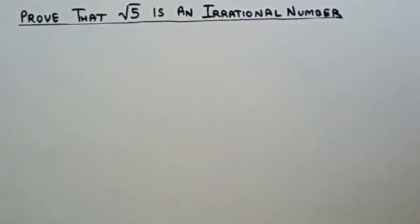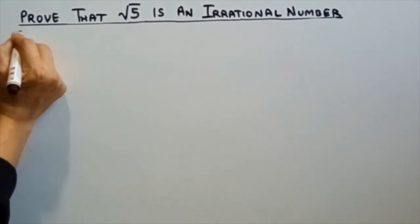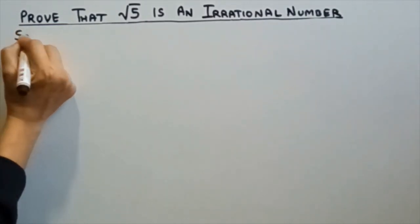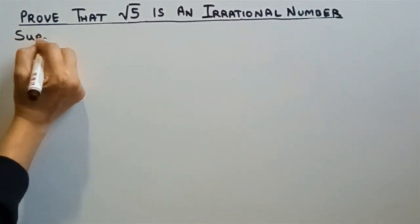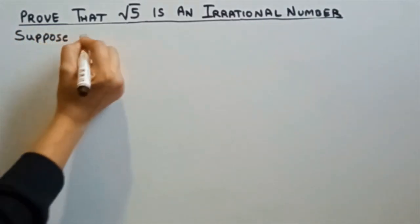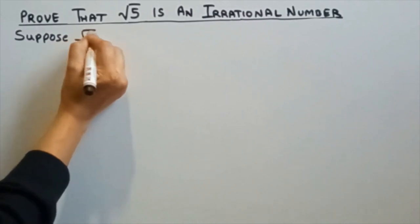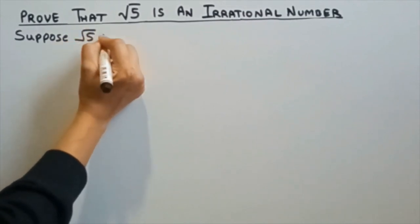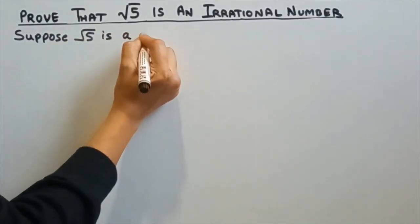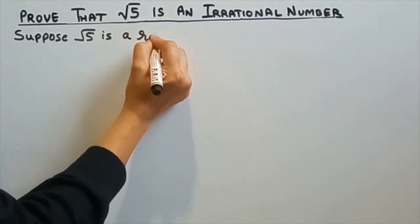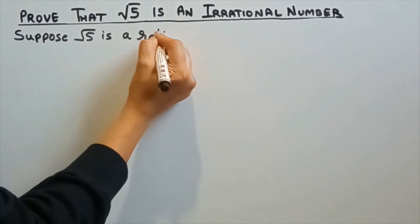Hello friends, welcome back to Shivik Tutorials. Let's prove that root 5 is an irrational number. We'll suppose that root 5 is a rational number.